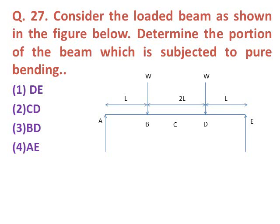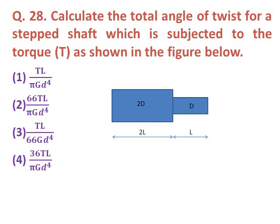Question twenty-seven: Consider the loaded beam shown in the figure. Determine the portion of the beam subjected to pure bending. In the BD section there is no shear stress, which means that section is under pure bending. The correct answer is option three — the BD section is subjected to pure bending.